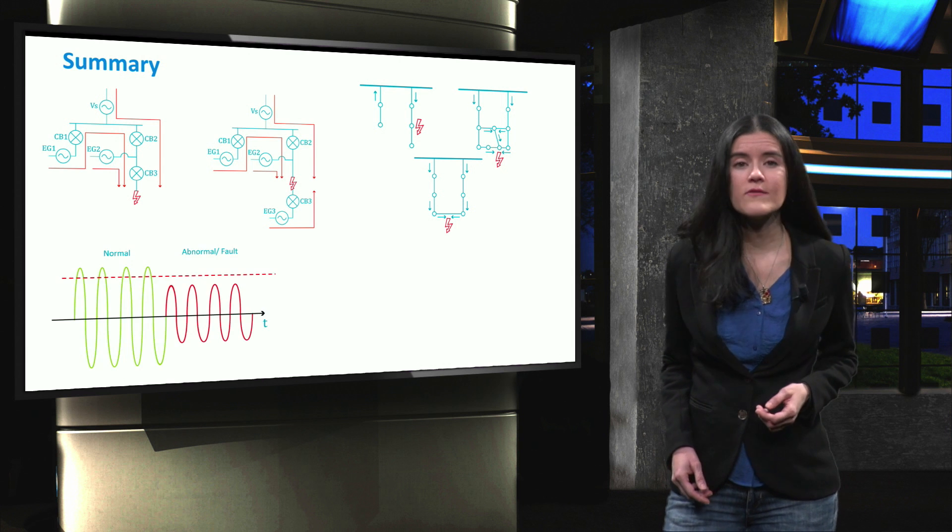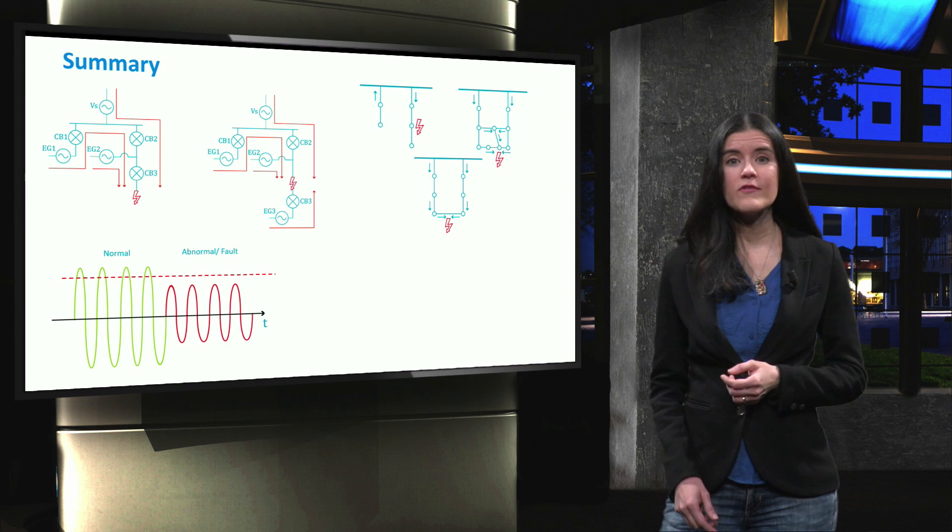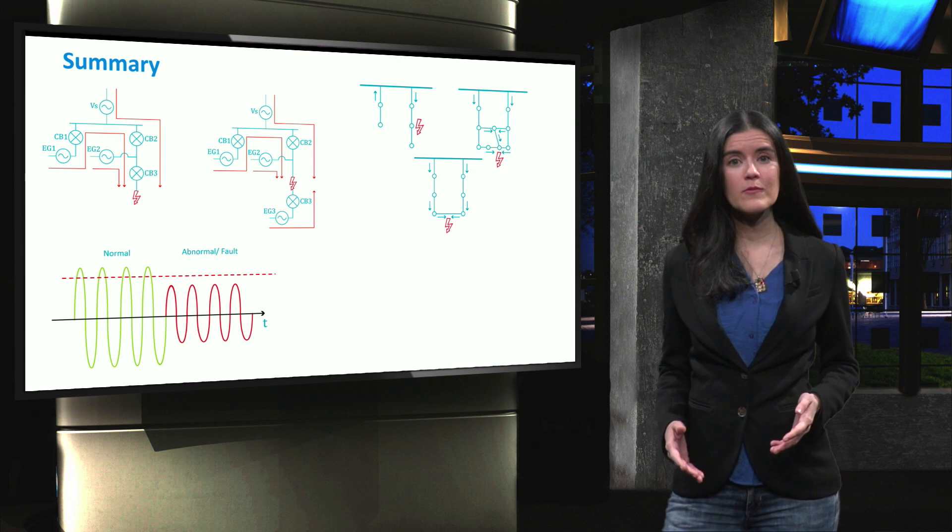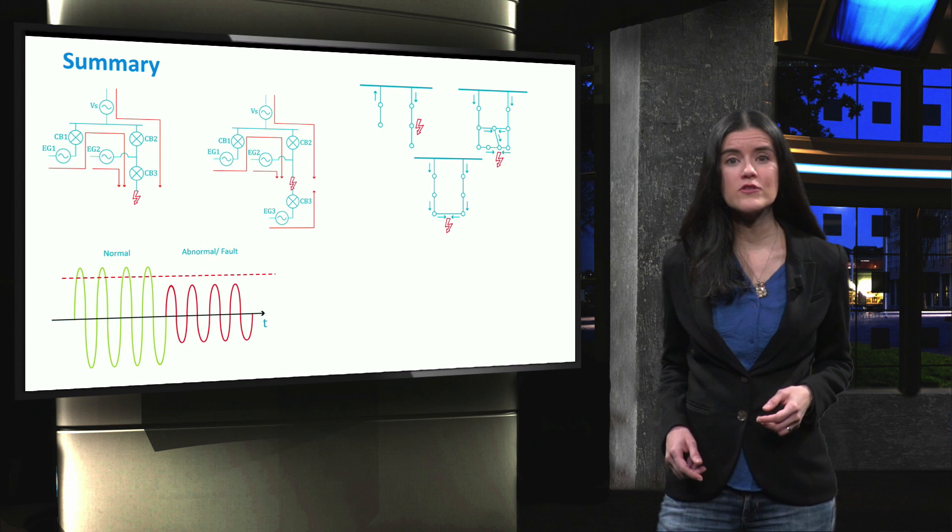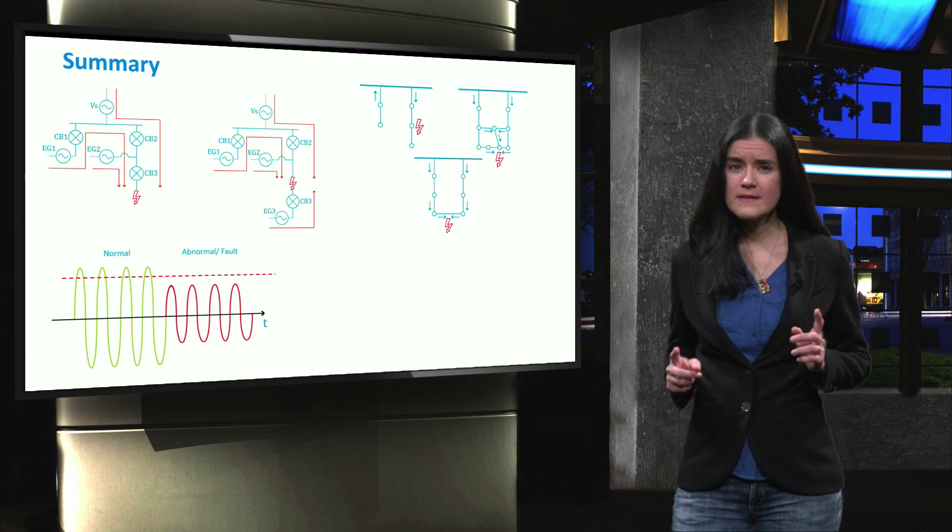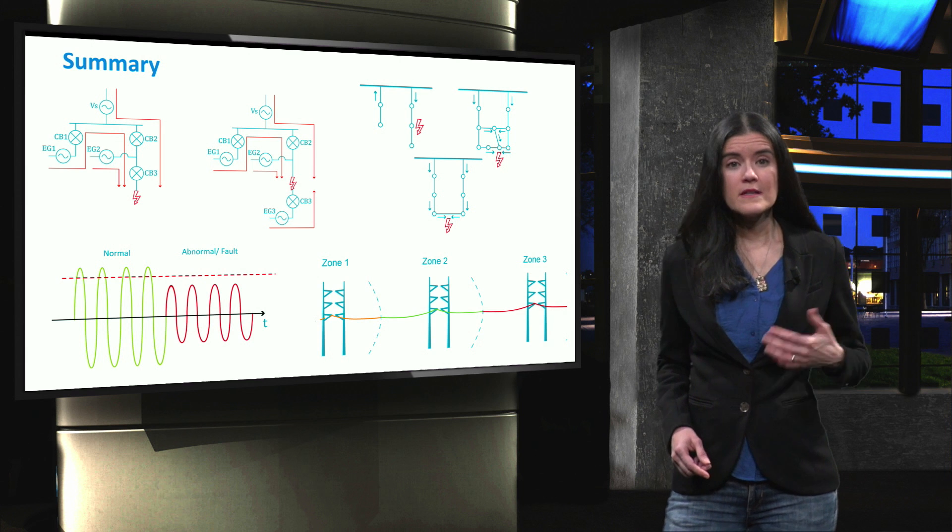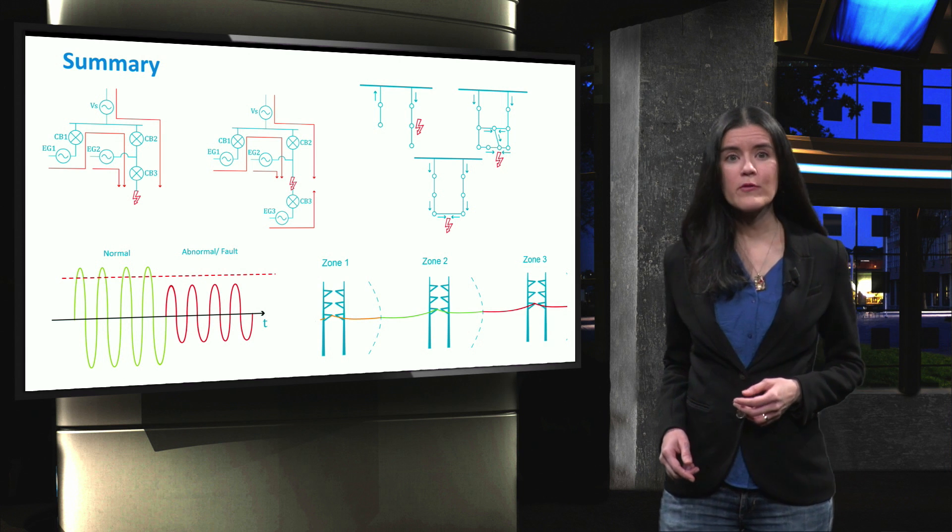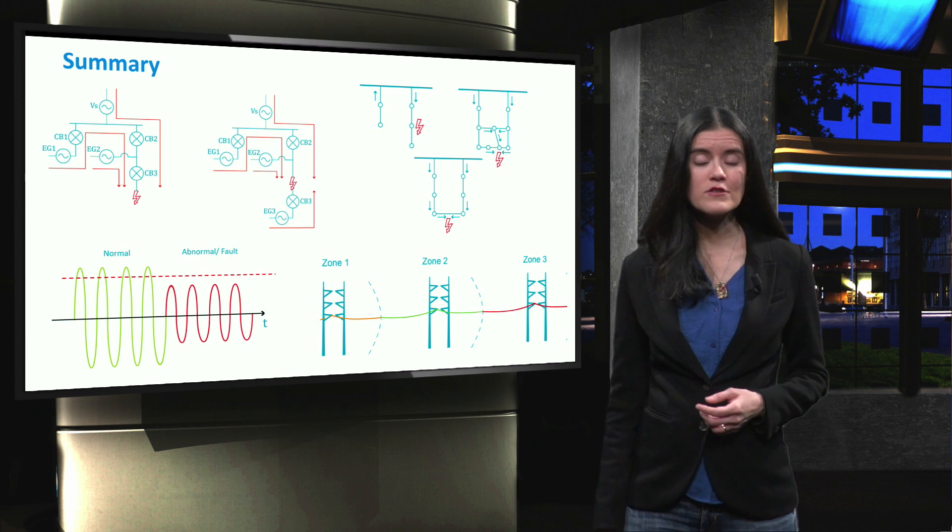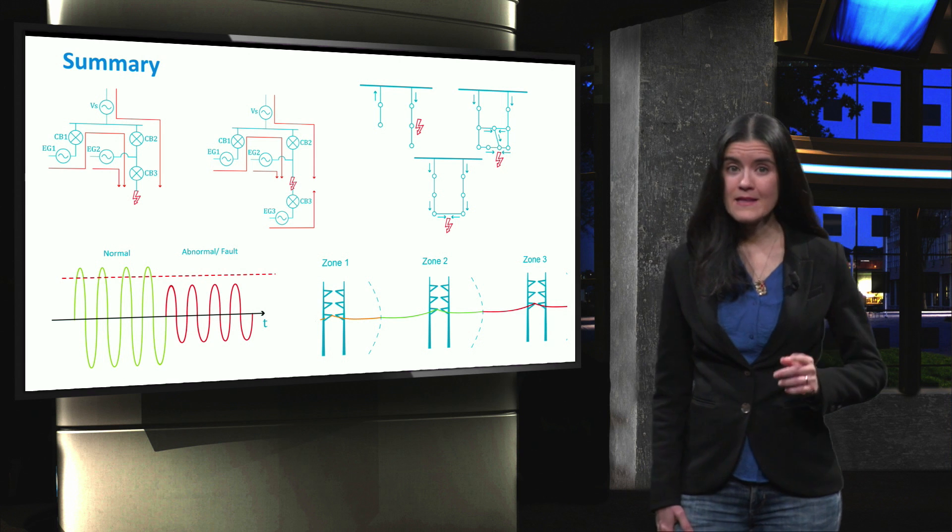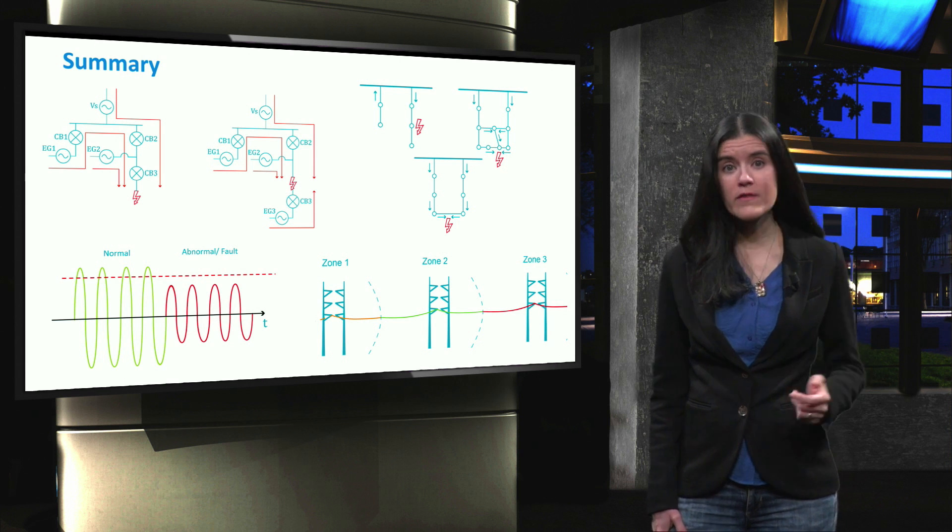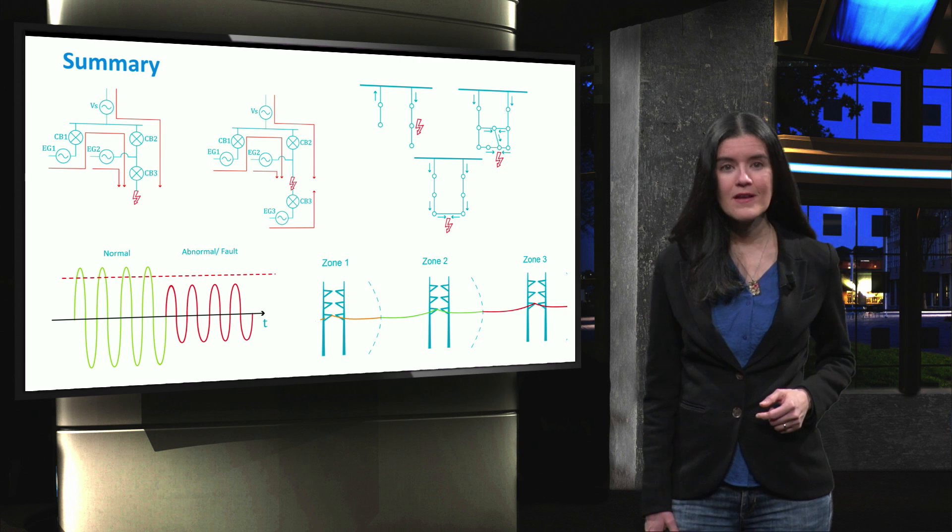We also looked at two protection methods. The first one is the voltage-based protection method, in which any significant drop in the RMS voltage value measured results in the intervention of the control system. The second method is the distance protection method. This provides a good backup for neighboring protection devices by sensing faults in its zone. In the next video, we will go over some other protection methods in microgrid. See you there!